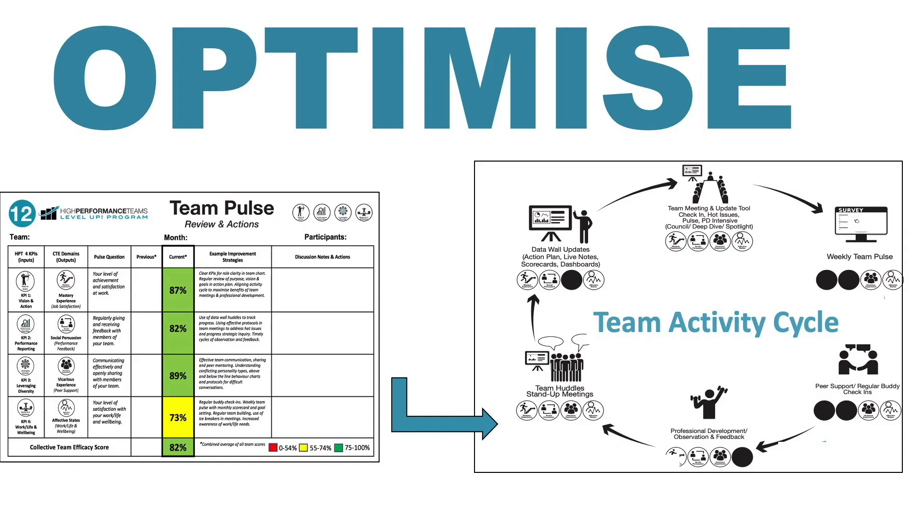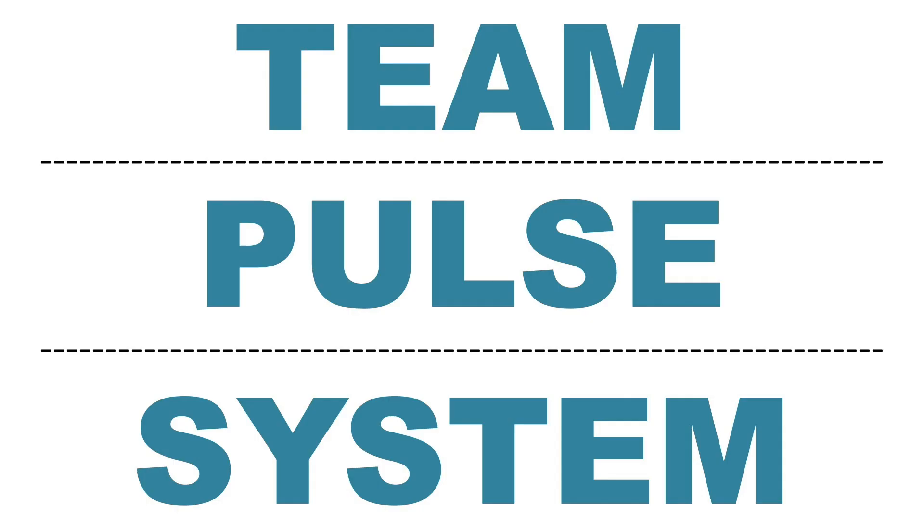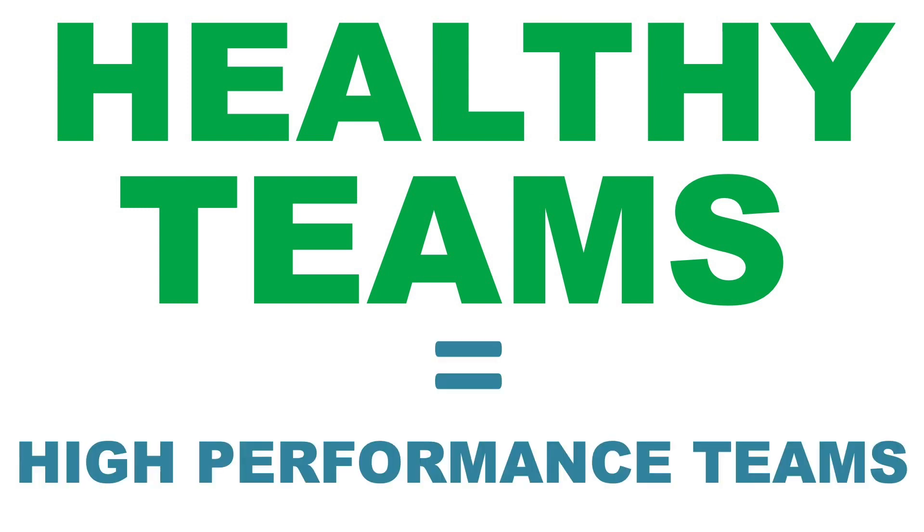By engaging in our regular pulse check-ins, monthly scorecards, and commitments to positive action, we're going to optimise team activity over our activity cycle, and bit by bit over the course of the year, progressively improve team health. That's an overview to get you started on using team pulse systems to build healthy teams — because healthy teams are high-performance teams. Looking forward to your experiences maximising team health using the pulse system. Until next time, bye for now.